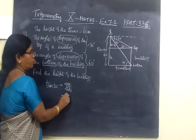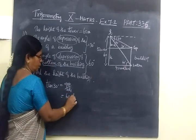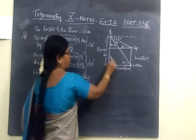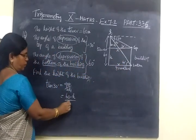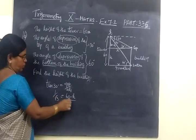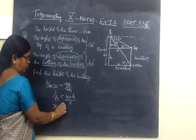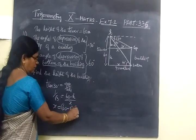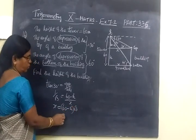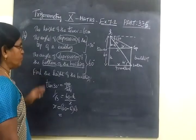So we write opposite side, 60 minus h, by adjacent. Adjacent we take it as some x, so equal to x. Tan 30, 1 by root 3. Cross multiply. x equal to 60 minus h into root 3.